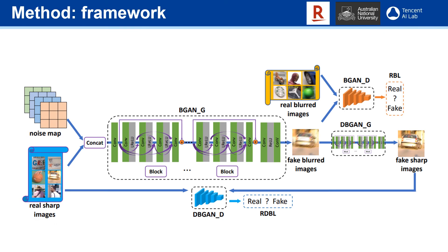This is our proposed framework and training process. In this framework, there are BGAN and DBGAN, where D and G denote the discriminator and generator networks. The BGAN takes a sharp image as input and outputs realistic blurry images. These blurry images are then fed into the DBGAN to learn how to de-blur. During the inference stage, only the DBGAN is applied.